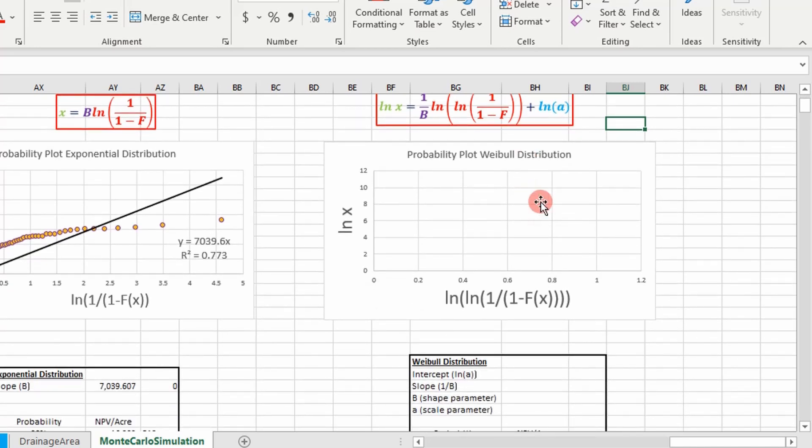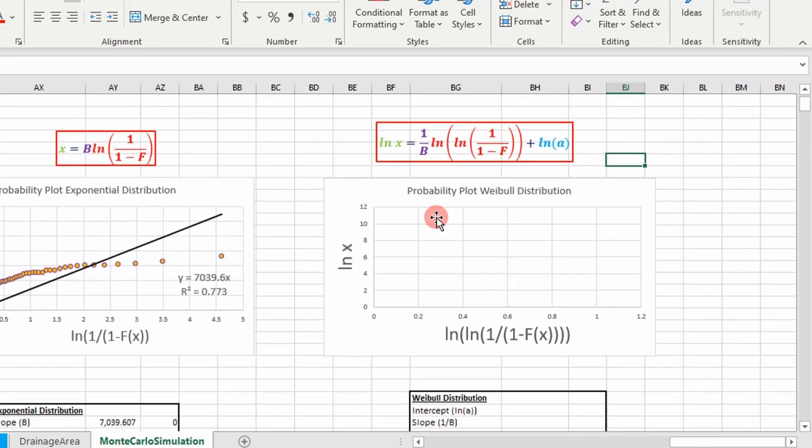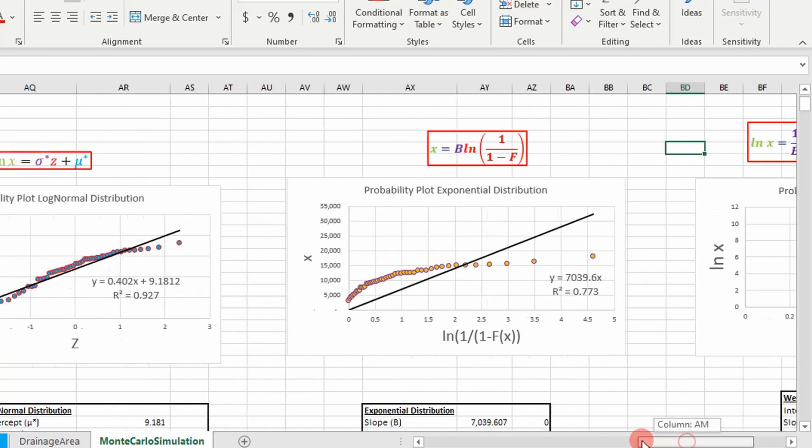The first step is to plot y versus x. In this case, it's the natural log of the random variable versus this equation. Let's go back over and see what we have.